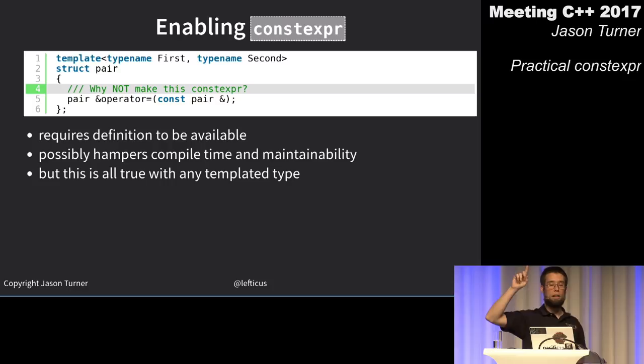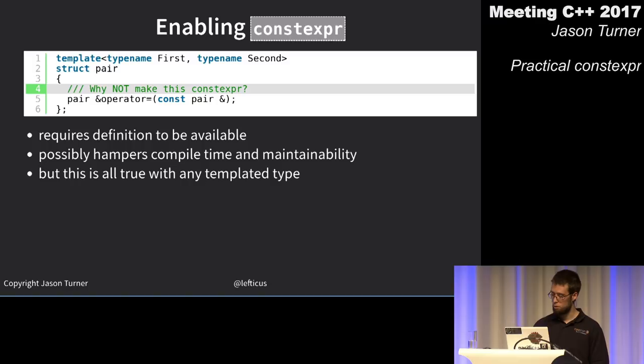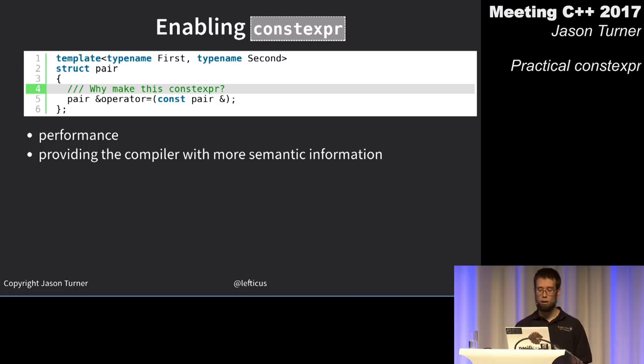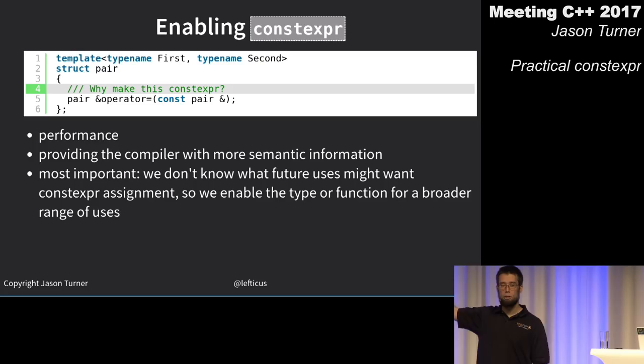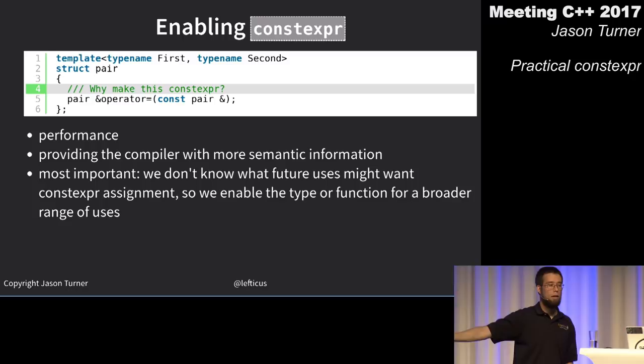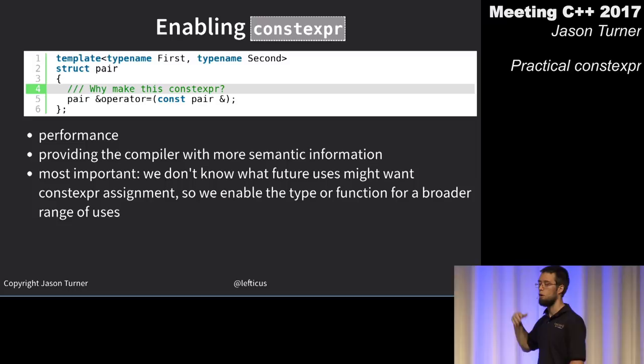Making it constexpr potentially gives better performance and provides the compiler and user with more semantic information. The biggest headache we have is trying to use standard algorithms and library features that are not currently constexpr — so enable constexpr everywhere you can.